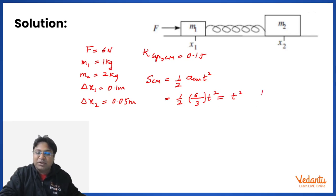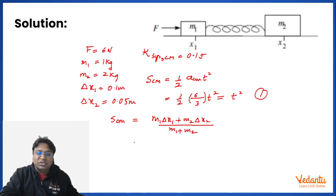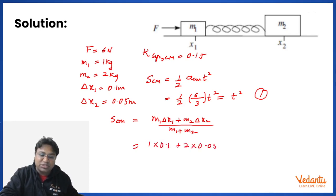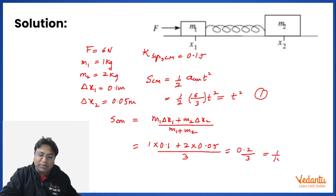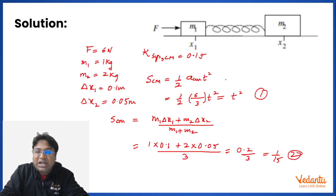Since a constant force of 6 N acts on a system of mass 3 kg, a_CM = 2 m/s². The displacement of the center of mass can also be written as (M1·ΔX1 + M2·ΔX2) / (M1 + M2) = (1×0.1 + 2×0.05) / 3 = 0.2/3 = 1/15. Equating gives T² = 1/15, so T ≈ 0.26 seconds.